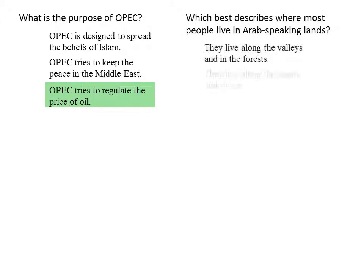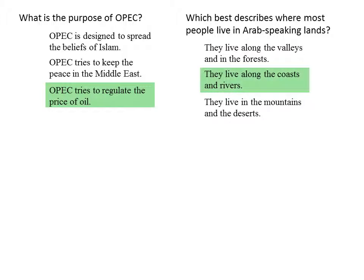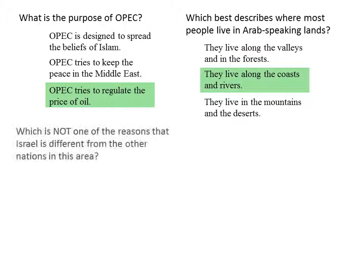Which best describes where most people live in the Arabic-speaking lands? Do they live along the valleys and in the forests? Along the coasts and rivers? Or do they live in the mountains and the deserts? Which is not one of the reasons that Israel is different from the other nations in this area? Is it religion, natural resources, language, or climate?